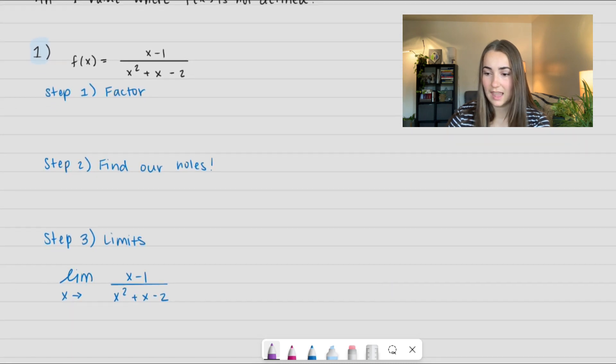First we have f(x) = (x-1)/(x²+x-2). So our first step when we're looking for holes is to factor. The numerator can't be factored out, it's already simplified as it can be, but I'm going to go ahead and factor out that denominator. So this becomes (x+2)(x-1).